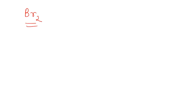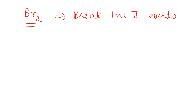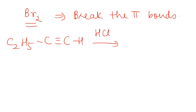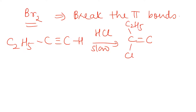In these types of reactions, halogens like Br2 break the pi bonds, and that is how they get added over alkenes and alkynes. For example, if we have C triple bond CH, with HCl the reaction is slow, so the first bond gets broken and H and Cl are added — not substitution, but addition.